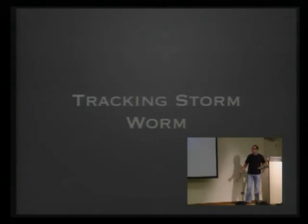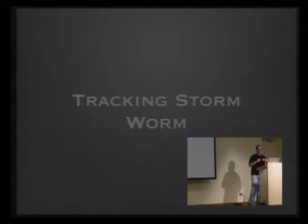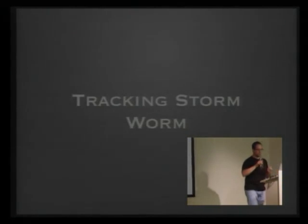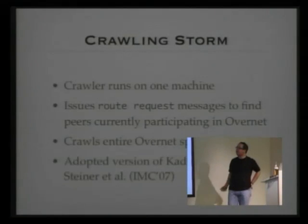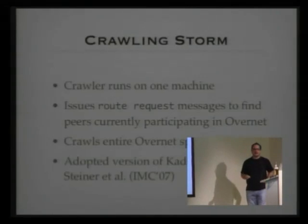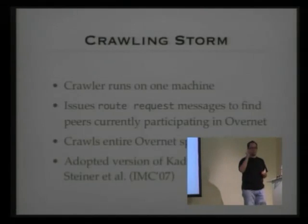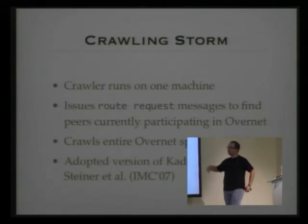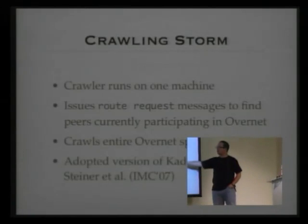Now, what can we learn more about Storm? We have this peer-to-peer network where each bot communicates with a set of peers, and we want to get an overview of how many peers there are and how many are infected with Storm. In order to get an overview of the total peer count, we implemented a crawler. The basic idea is that as a member of the P2P network I can ask my peers for their contacts, and if I do this recursively I crawl the whole space.